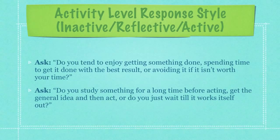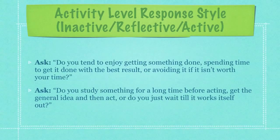Then you have activity-level response styles, meaning a person is either inactive, reflective, or active. I act quickly when put in most situations — I try to solve problems rather than reflect on the relevant and irrelevant information. Others do not seem to engage information processing unless they are forced. These are your inactives. To find out what you're dealing with, just ask: do you tend to enjoy getting something done, spending time to get it done with the best results, or avoiding it if it isn't worth your time? Or: do you study something for a long time before acting, get the general idea and then act, or just wait until things work themselves out?